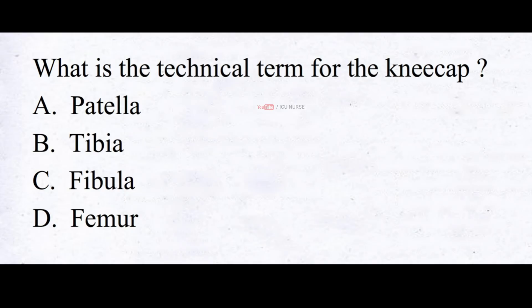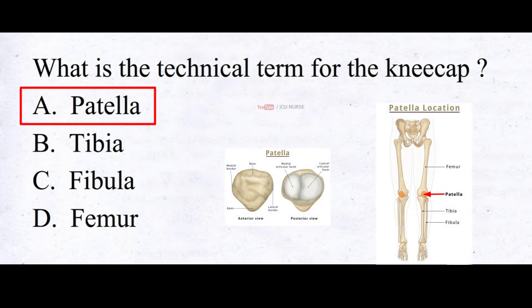What is the technical term for the kneecap? A. Patella, B. Tibia, C. Fibula, D. Femur. And the correct answer is A. Patella. The name patella is derived from its shape, which resembles a flat circular plate or dish. The patella is a sesamoid bone, which means it is embedded within a tendon and helps to increase the mechanical advantage of the muscle.